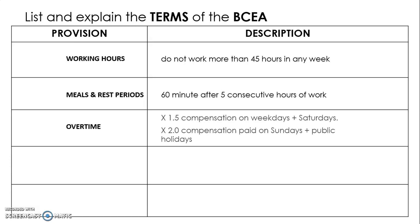Overtime: employees are paid 1.5 times their hourly rate as compensation for working on weekdays and Saturdays. If an employee by agreement works on Sundays and public holidays, they are paid double their hourly rate.